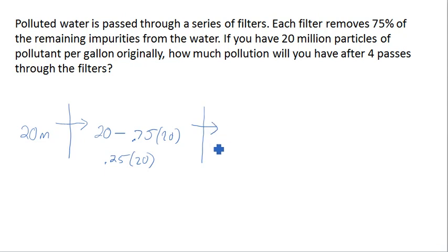So now we pass through our second filter. How much are we going to have left? Well, we're going to have what we had before, this amount, minus three quarters of it. In other words, we're going to keep 25% of what we had before. So we're going to have 25% of that 25%. Or in other words, we're going to have 25% squared times 20.